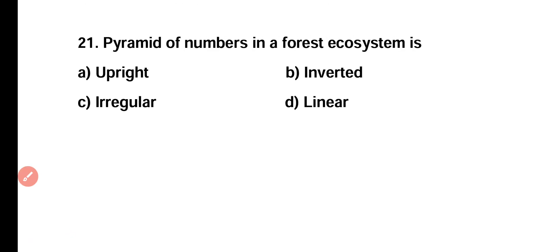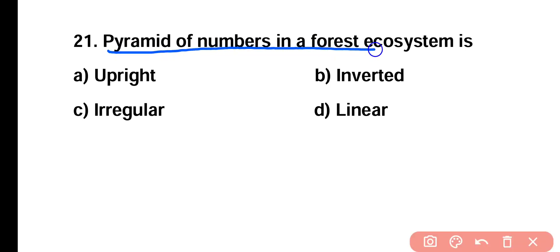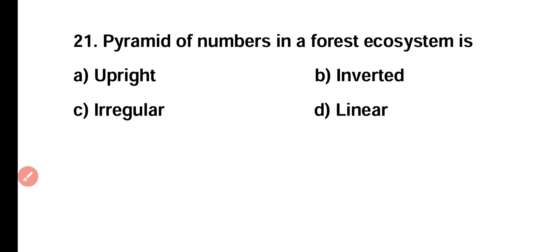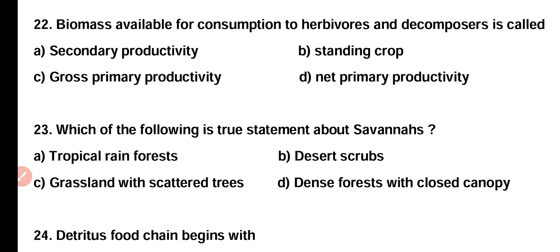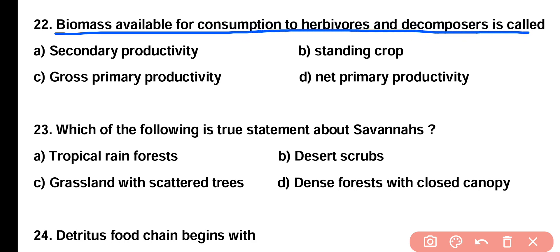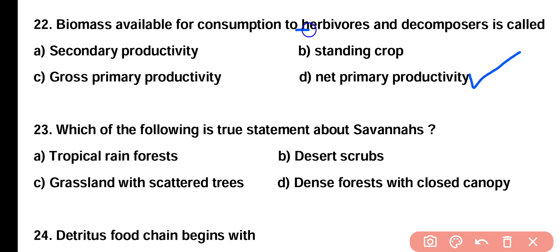Question number twenty-one: pyramid of number in a forest ecosystem is upright, inverted, irregular, or linear? Correct answer is option A. Pyramid of number in a forest ecosystem is in an upright position. Question number twenty-two: biomass available for consumption to herbivores and decomposers is called secondary productivity, standing crop, gross primary productivity, or net primary productivity? Correct answer is option D. Herbivores and decomposers are collectively known as heterotrophs, and the biomass available to them for consumption is called net primary productivity.